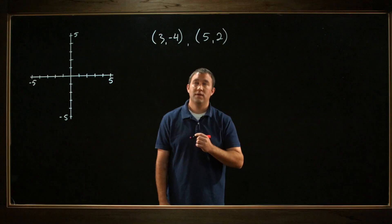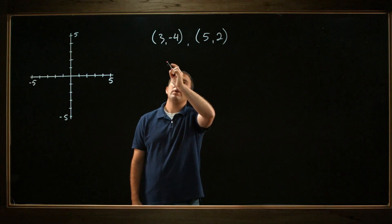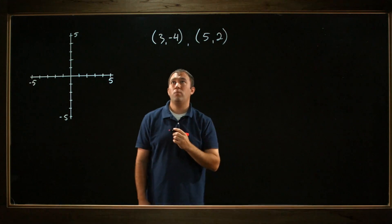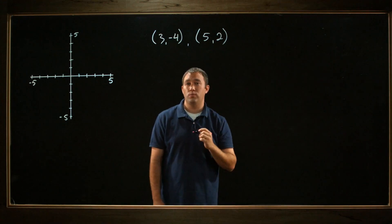Hi, I'm David. Let's look at this problem. We're given the points (3, -4) and (5, 2), and we're asked to find the slope of the line that passes through these two points.